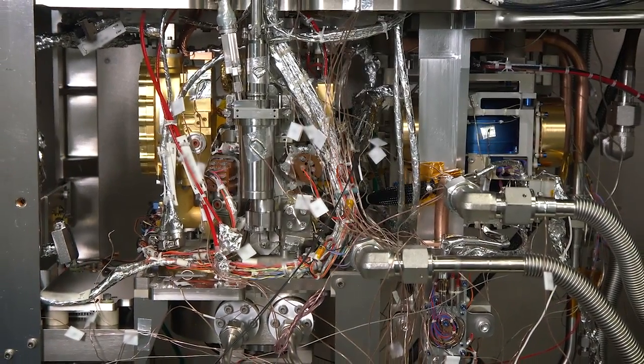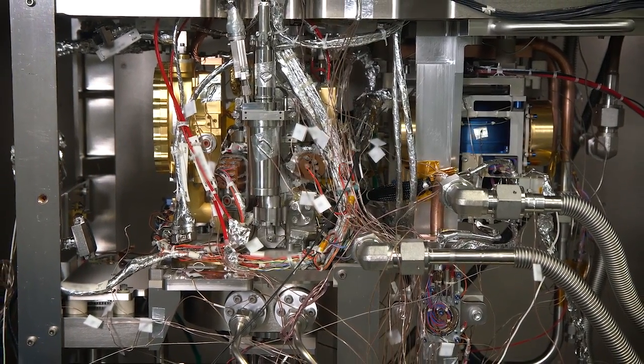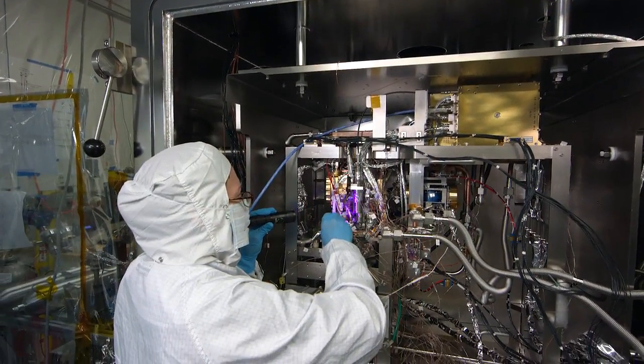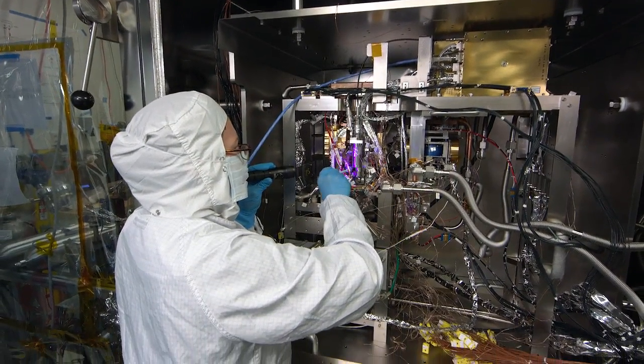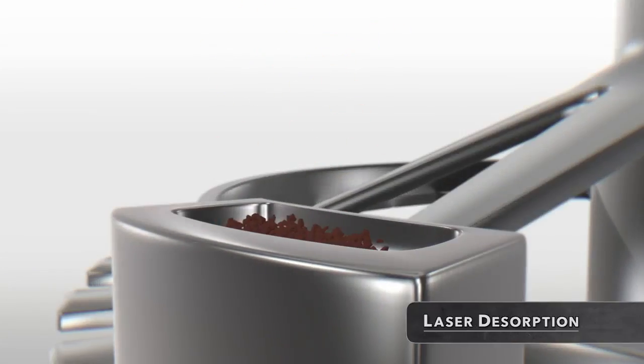While gas chromatography has been used to study Mars since the Viking program, MOMA has a second method for preparing samples that has never been used on another planet. In laser desorption mode, a sample is placed beneath a powerful ultraviolet laser.